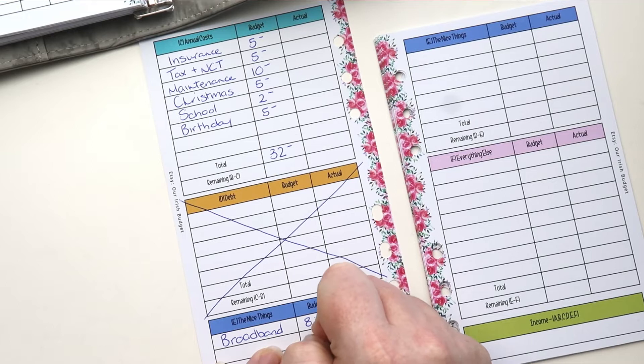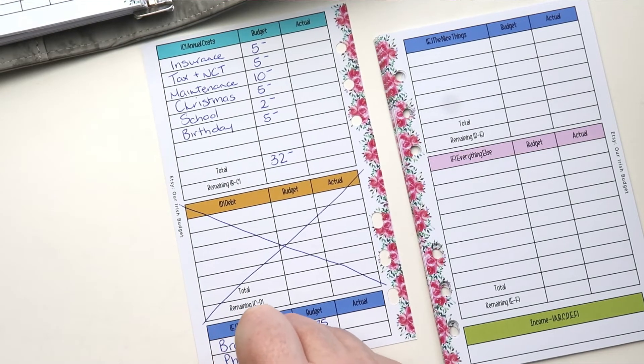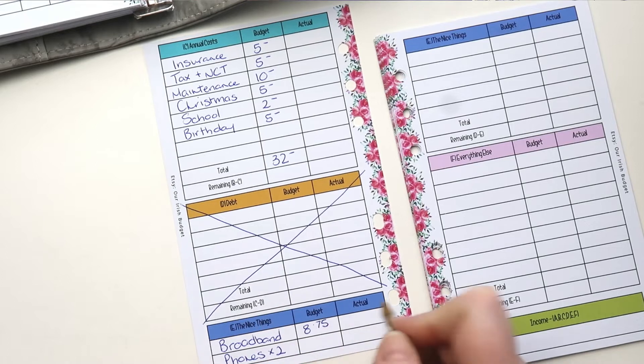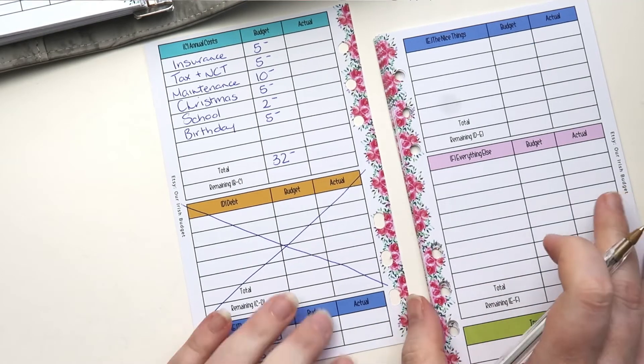So 8.75 on our broadband. And then mine and Robert's mobile phone, two different companies, but we have really good plans. And we just put five euro per week towards those.